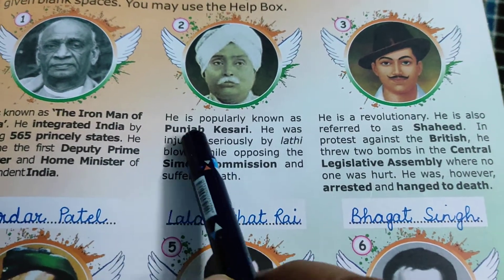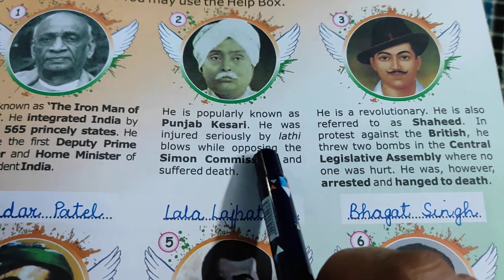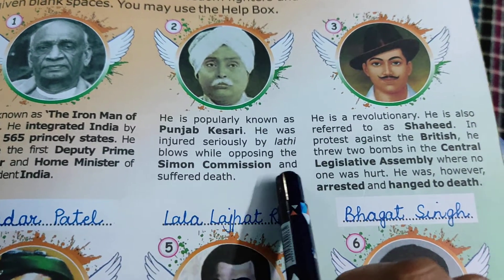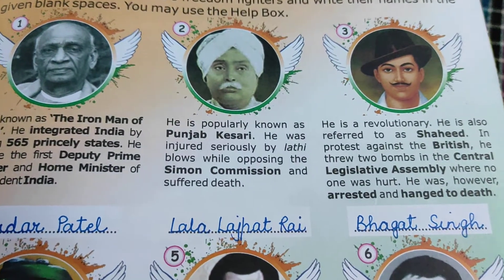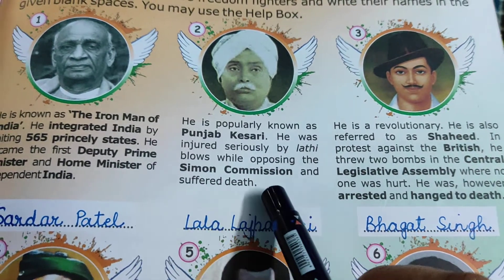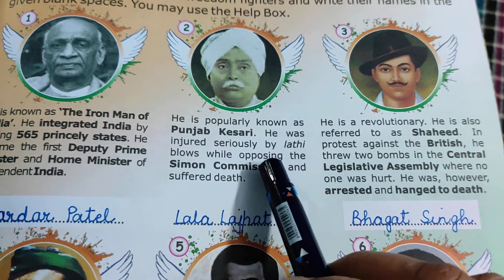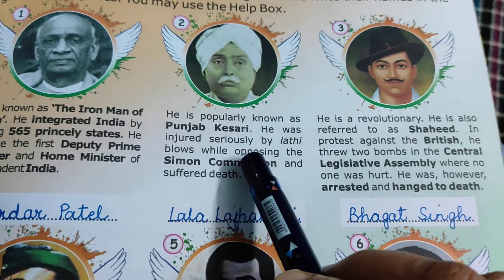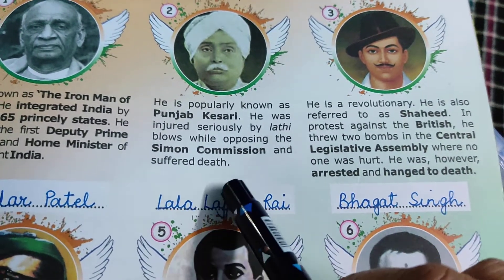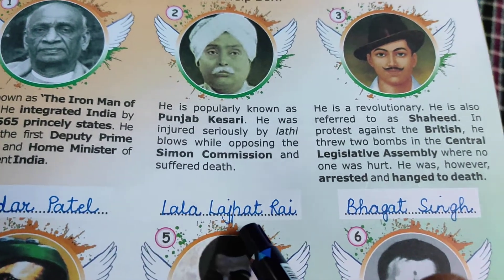Coming on to the second one. This freedom fighter is popularly known as Punjab Kesri. He was injured seriously by the lathi blows while opposing the Simon Commission and suffered death. He was the leader opposing the Simon Commission when Simon came to India. He was seriously injured by the lathi charge done by the police at that time and he died because of that. This freedom fighter's name is Lala Lajpat Rai.